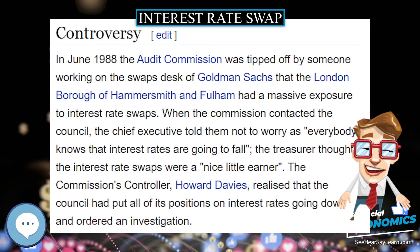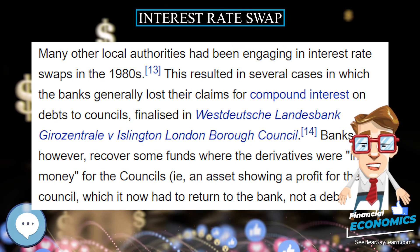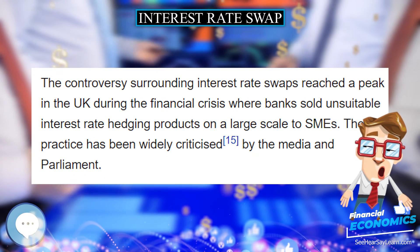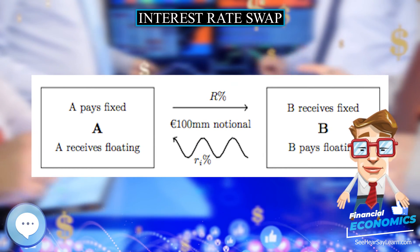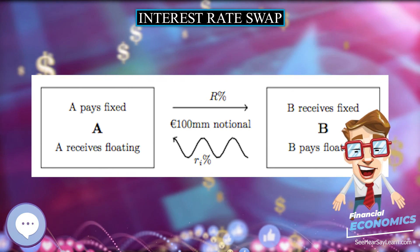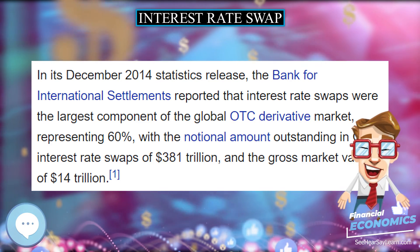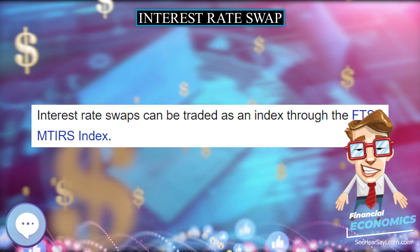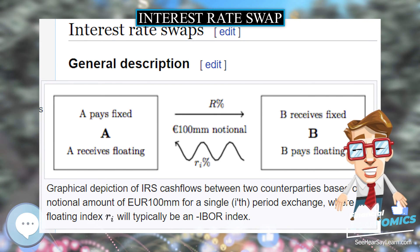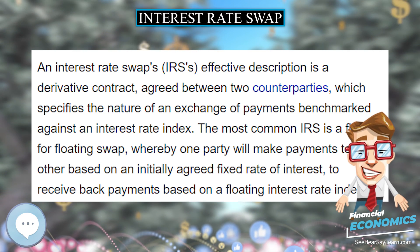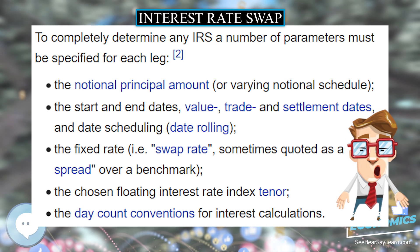Moreover, interest rates had increased from 8% to 15%. The auditor and the commission then went to court and had the contracts declared void; appeals all the way up to the House of Lords failed in Hazell v Hammersmith and Fulham LBC. The five banks involved lost millions of pounds. Many other local authorities had been engaging in interest rate swaps in the 1980s. This resulted in several cases in which the banks generally lost their claims for compound interest on debts to councils, finalized in West Deutschlandisbank Girozentrale v Islington London Borough Council. Banks did, however, recover some funds where the derivatives were in the money for the councils — an asset showing a profit for the council which it now had to return to the bank, not a debt. The controversy surrounding interest rate swaps reached a peak in the UK during the financial crisis, where banks sold unsuitable interest rate hedging products on a large scale to SMEs. The practice has been widely criticized by the media and parliament.